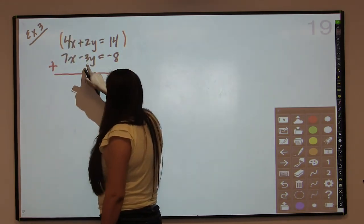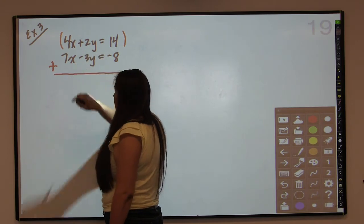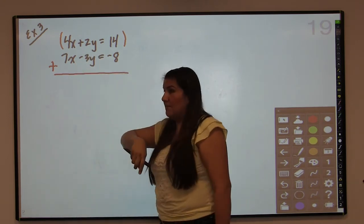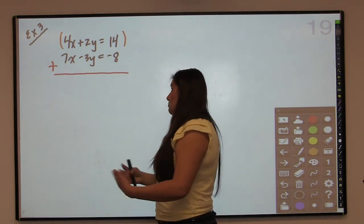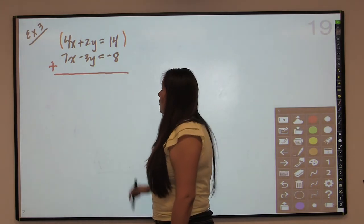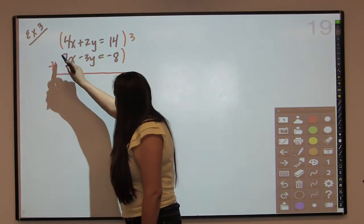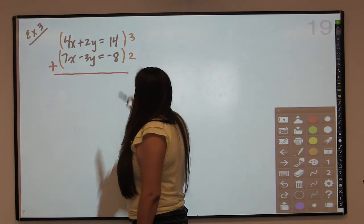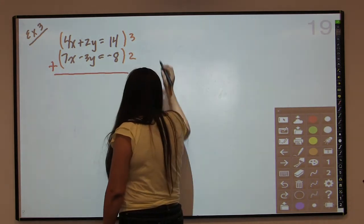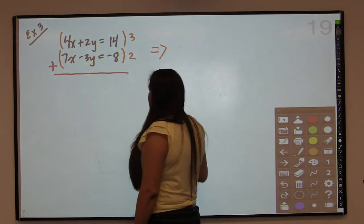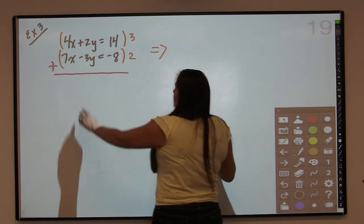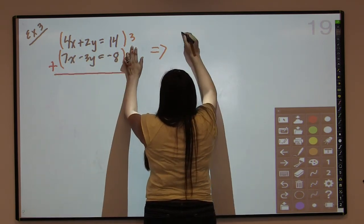I am going to choose to eliminate the y variable because they already have opposite signs. One is positive and one is negative. And every time a student has to put in a negative, there is just more chance for error. So I am going to multiply this by 3 and multiply the bottom one by 2. I'm going to do that because I want it to be 6 and negative 6. So 4x times 3 is 12x.